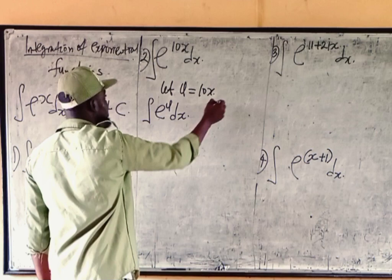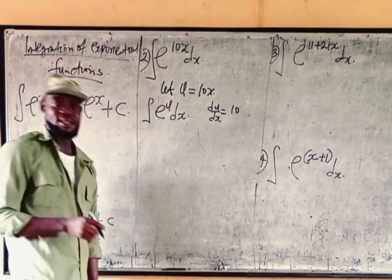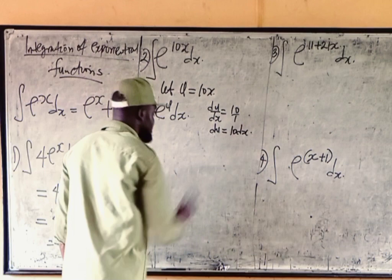We are going to get it from this place. How do you do that? Differentiating this u with respect to x, we are going to be having 10. Differentiate u with respect to x, we're going to be having 10. Then make dx the subject of the formula. We're going to be having du equals dx times 10, so dx equals du over 10.